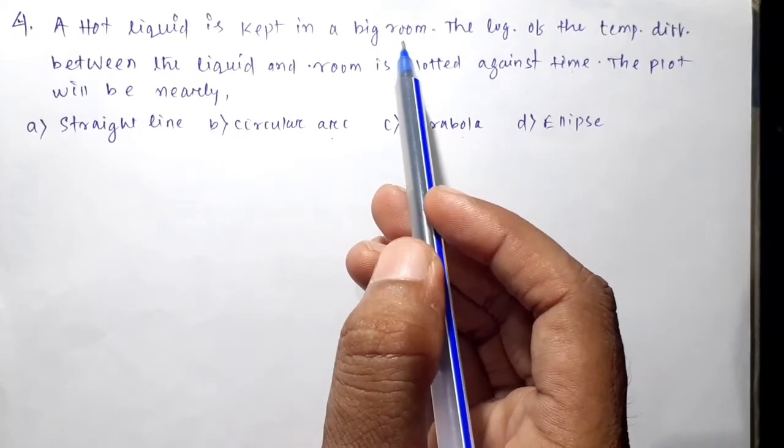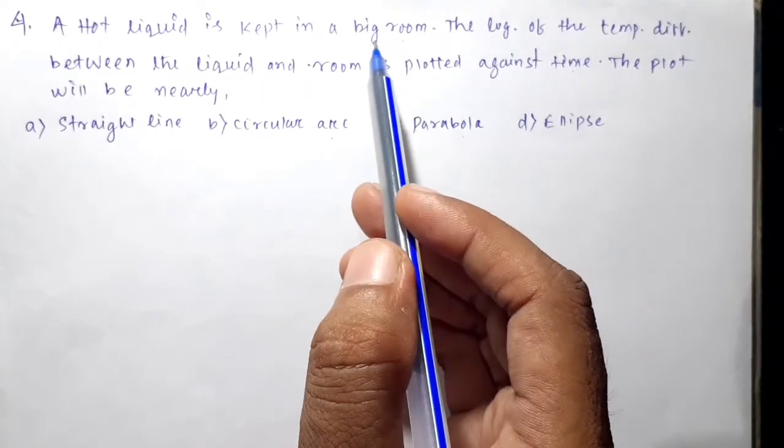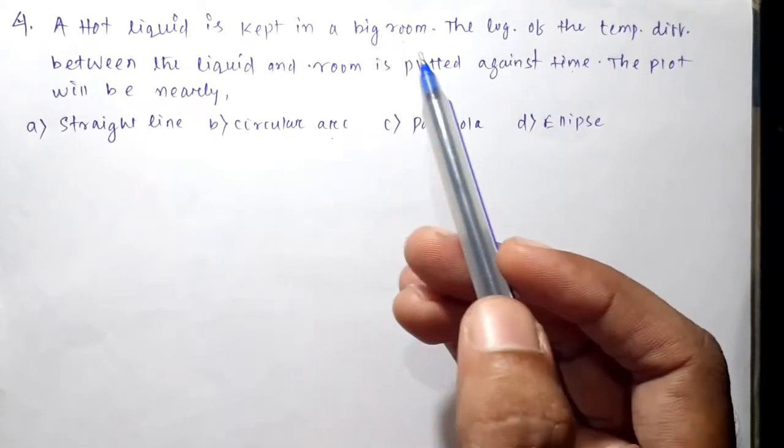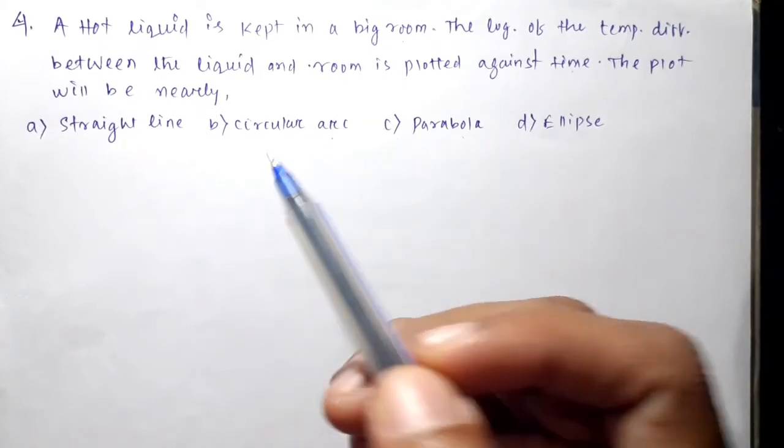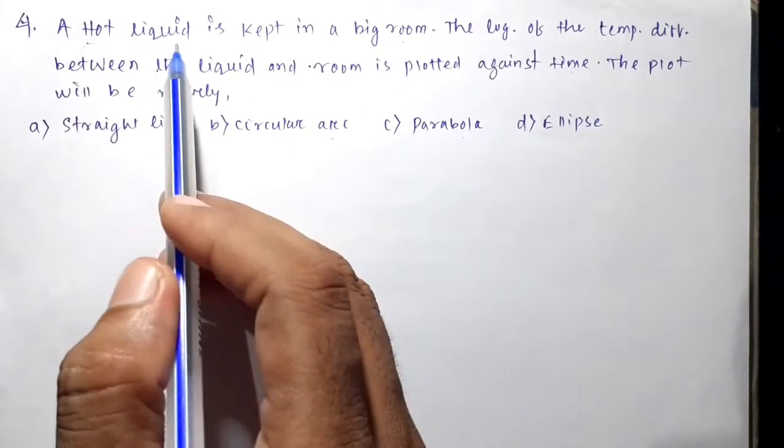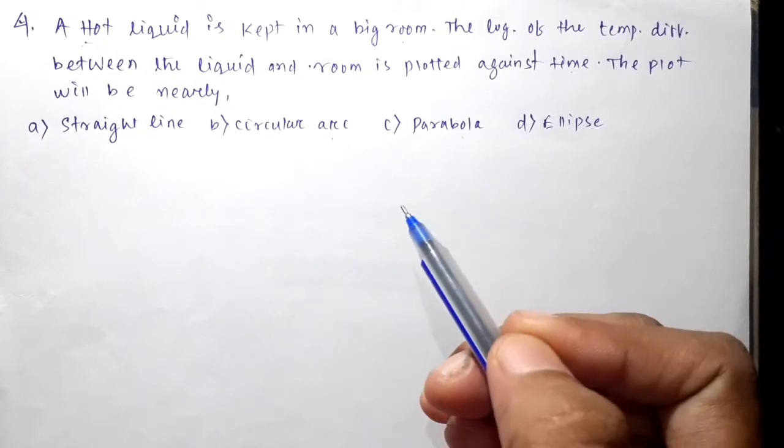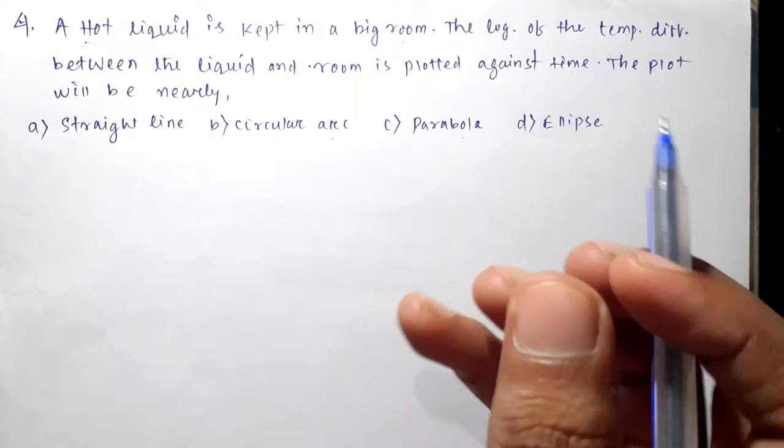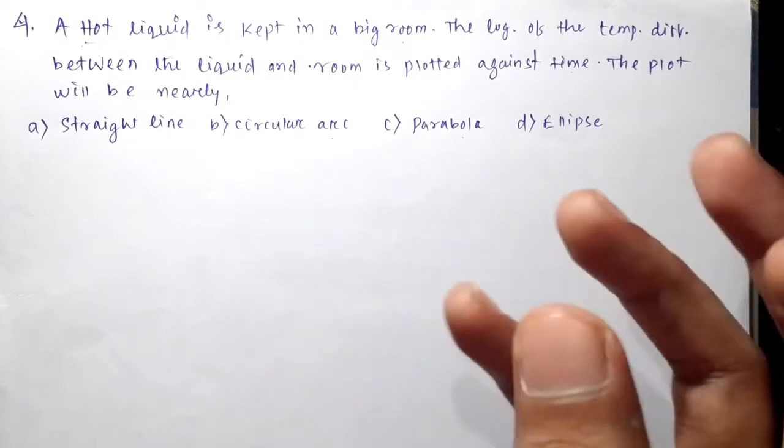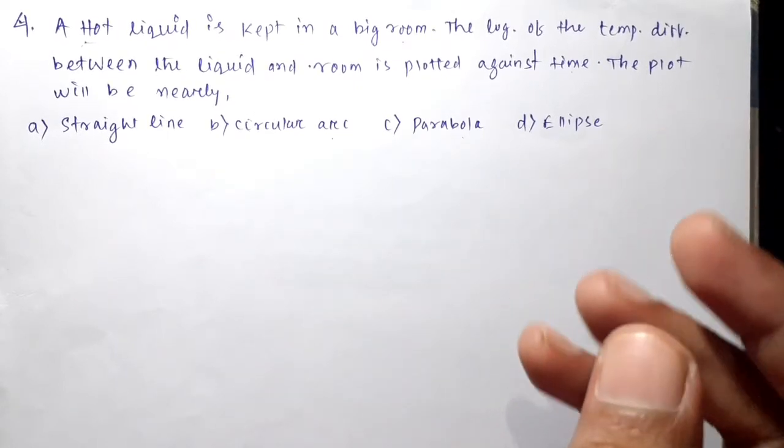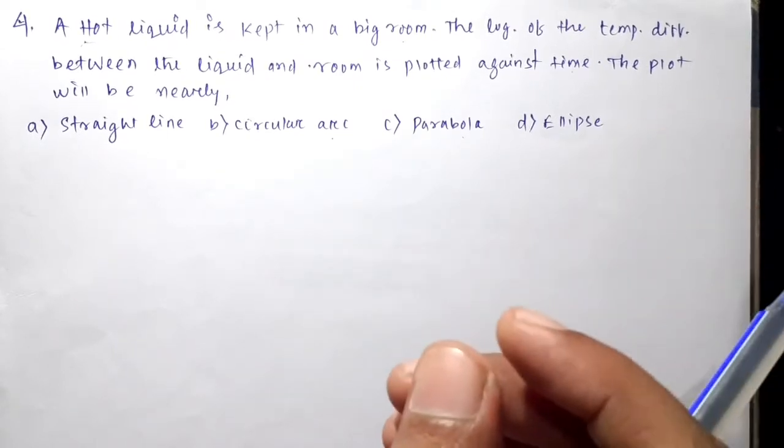So actually, the hot liquid is at room temperature initially. The liquid temperature is T and the room temperature is T0. When any kind of hot body or hot liquid is kept in open air, it will try to release heat and equalize with room temperature.